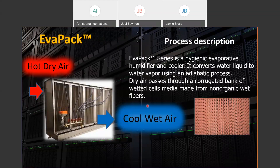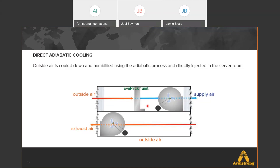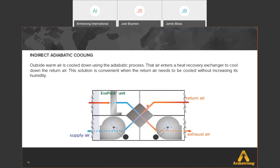There are two different types of adiabatic cooling. The first is direct adiabatic cooling: outside air is cooled down and humidified using the adiabatic process — in this case our EVAPAC unit — and then directly injected into the server room. The second is indirect adiabatic cooling, where outside warm air is also cooled down using the adiabatic process, then that air enters a heat recovery exchanger to cool down the return air. This solution is convenient when the return air needs to be cooled without increasing its humidity. EVAPAC brings in outside air and mixes it with return air to not add humidification as strongly as direct cooling would.